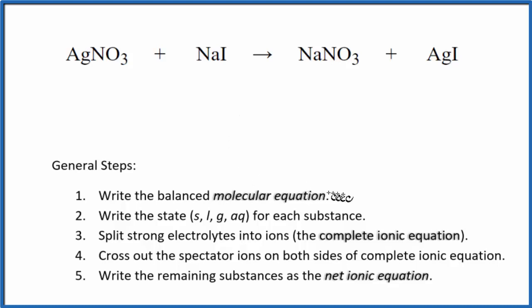With net ionic equations, first thing we do is balance the molecular equation. And this is the molecular equation. It's already balanced, which is kind of nice. After that, we write the state for each substance.